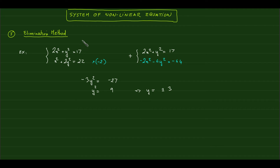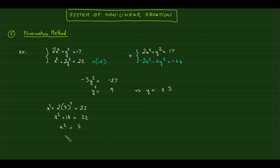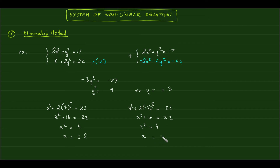We have two values for y, which means we'll get two values for x. Plugging y equals 3 into the second equation: x² + 2(3²) = 22, so x² + 18 = 22, giving x² = 4 and x equals plus or minus 2. Plugging y equals negative 3 gives the same result because (–3)² = 9, so x equals plus or minus 2 again.